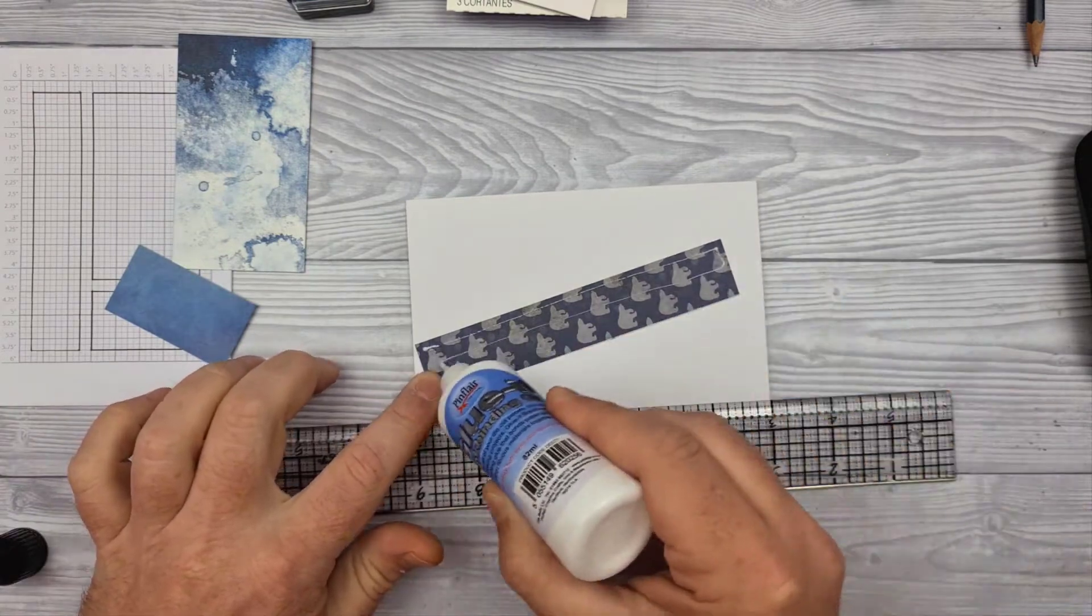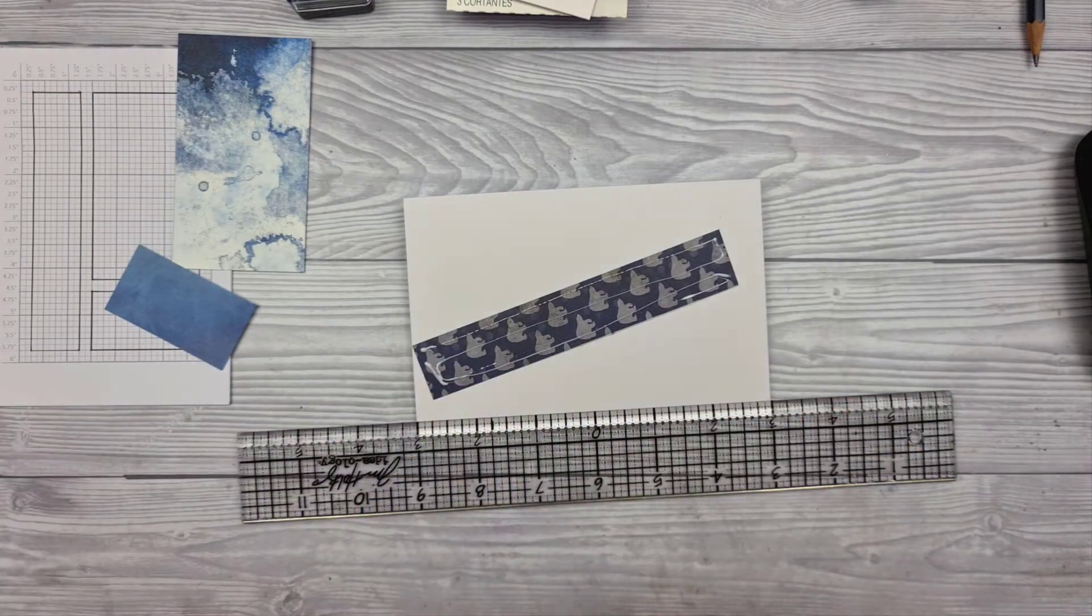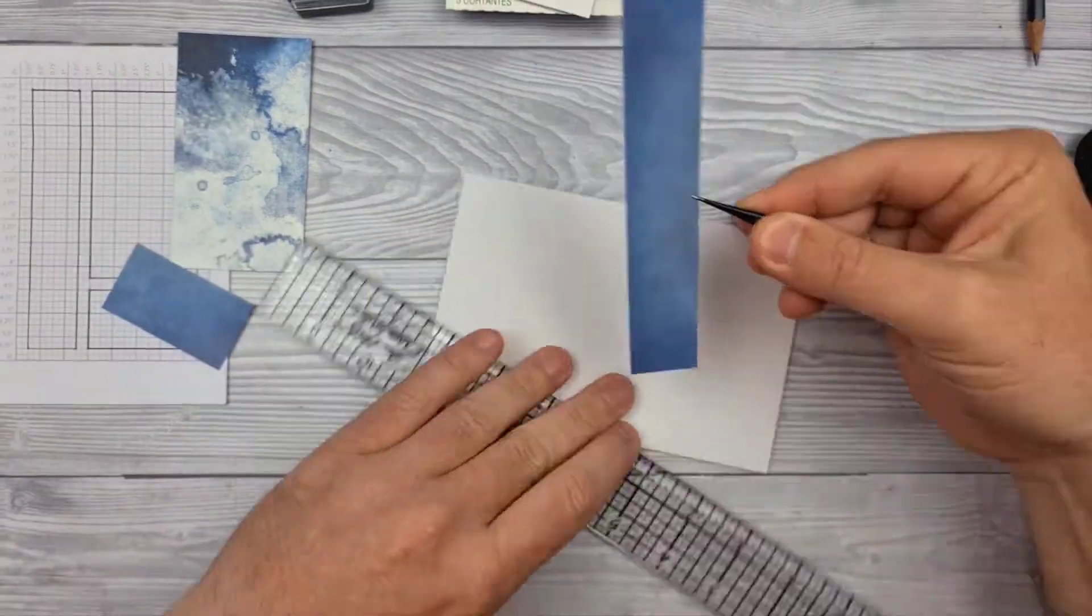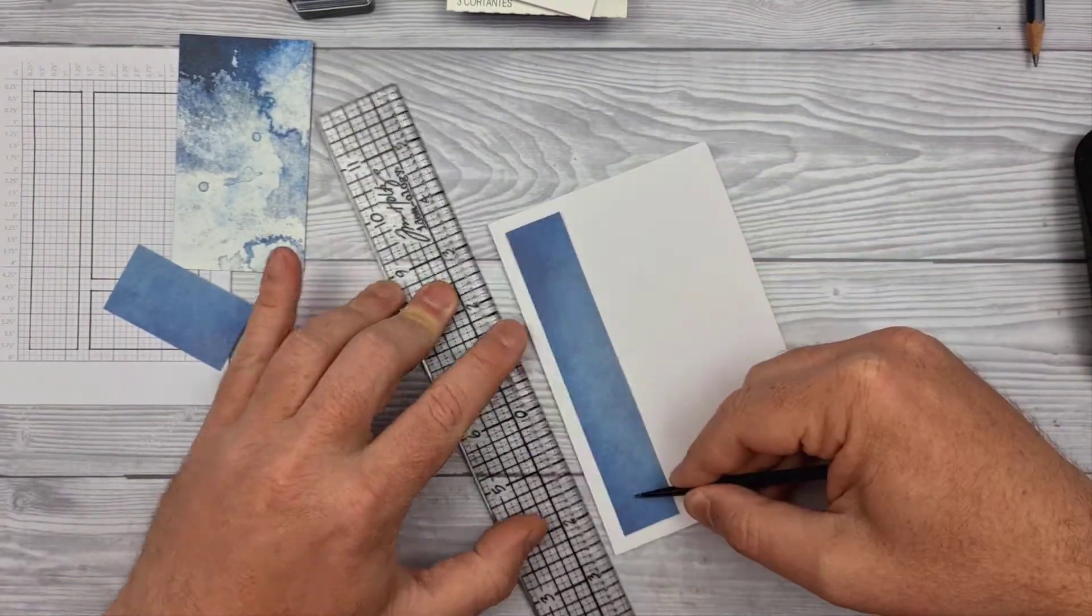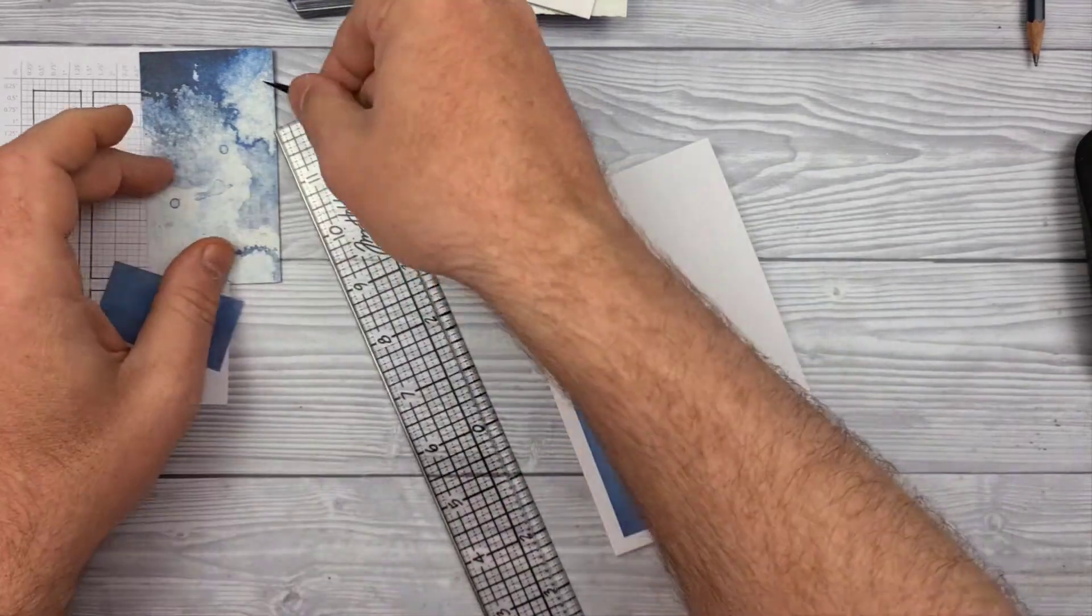Now I'm using the gridded ruler here to help me line up this first piece, because that will be the crucial point for the top and bottom of the other two pieces, so it's quite important that this one goes down straight.